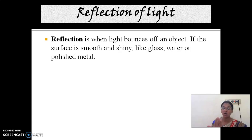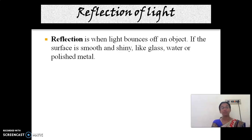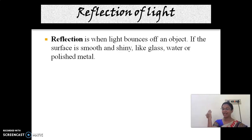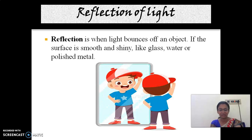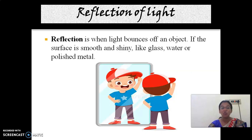Likewise, when light falls on any smooth shiny surface like glass, water, or polished metal, the light bounces back. This is called reflection. So reflection is just like throwing a ball on a wall — it comes back. When light falls on any shiny surface, it comes back. Reflection occurs only on a smooth shiny surface; we cannot see reflection on wood or any irregular surface.